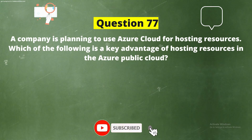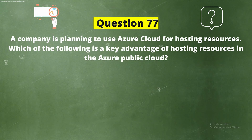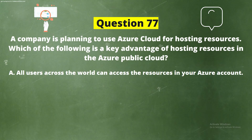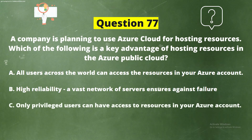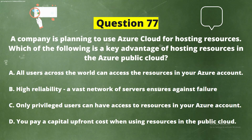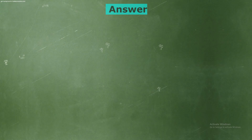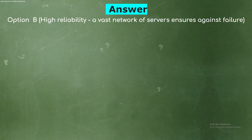Question 77: A company is planning to use Azure cloud for hosting resources. Which of the following is the key advantage of hosting resources in the Azure public cloud? Options: A) All users across the world can access the resources in your Azure account, B) High reliability — a vast network of servers ensures against failure, C) Only privileged users can have access to resources, D) You pay a capital upfront cost. The correct answer is option B, high reliability.